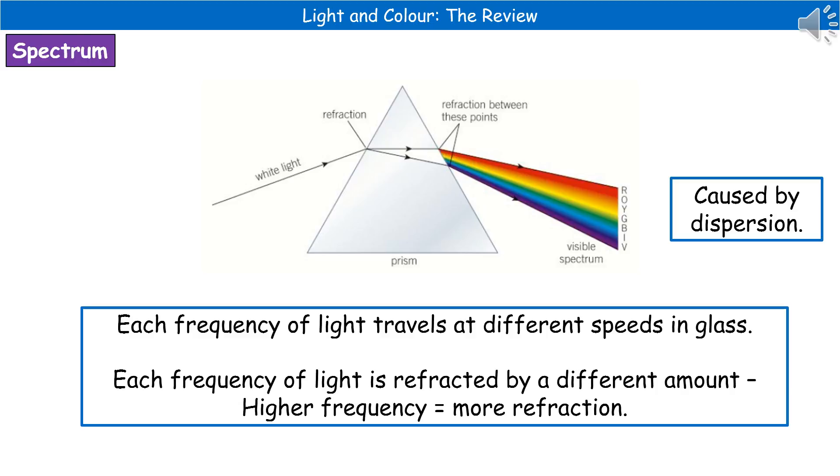So the higher the frequency, the more refraction occurs. And therefore, what we end up with is the white light being split into all of those parts of our visible spectrum.